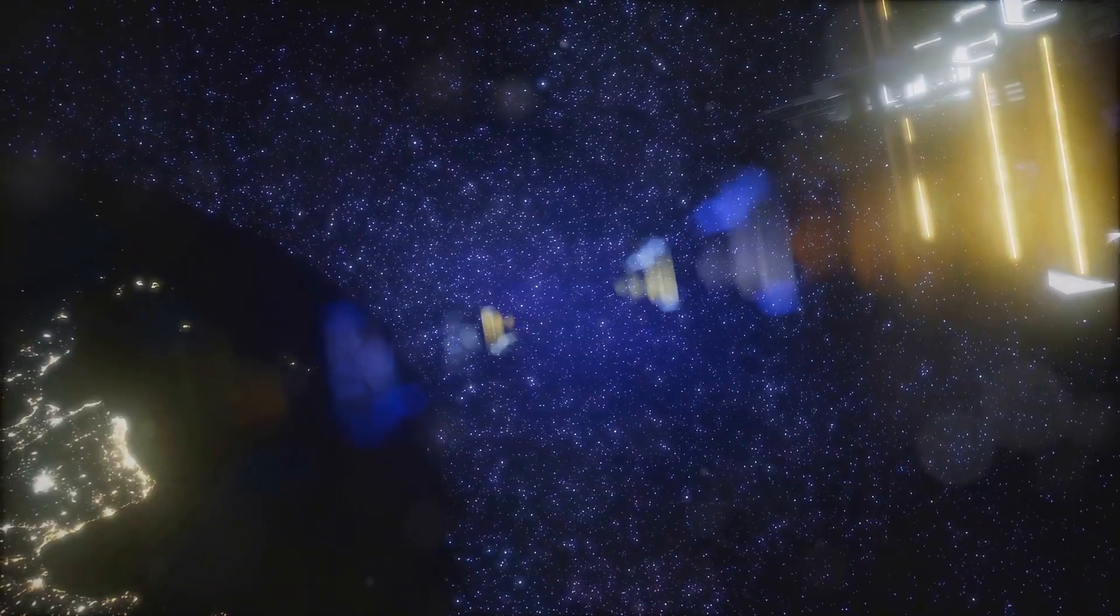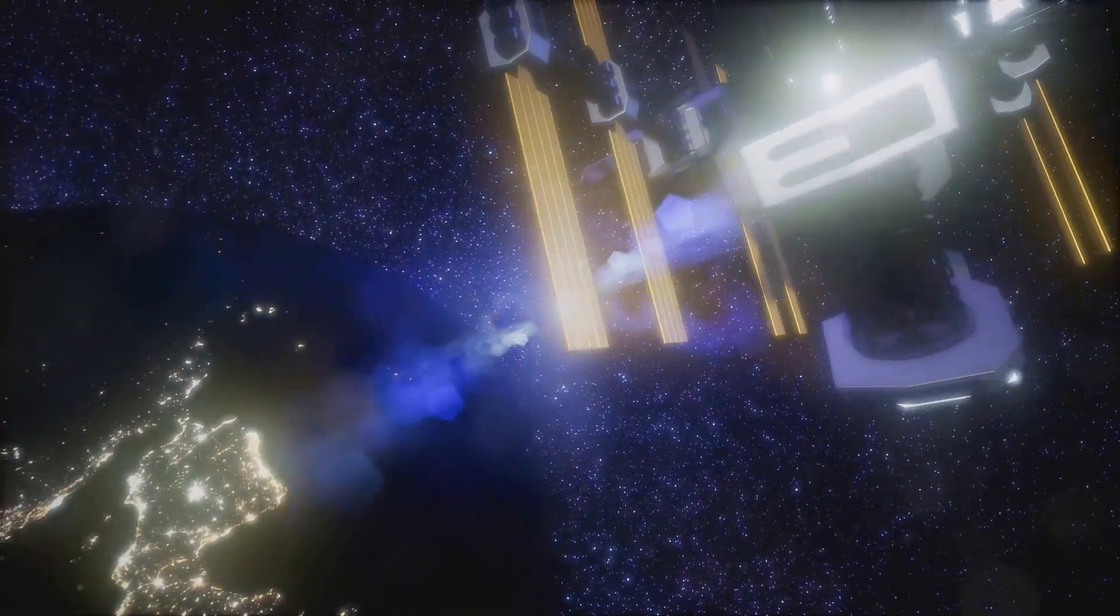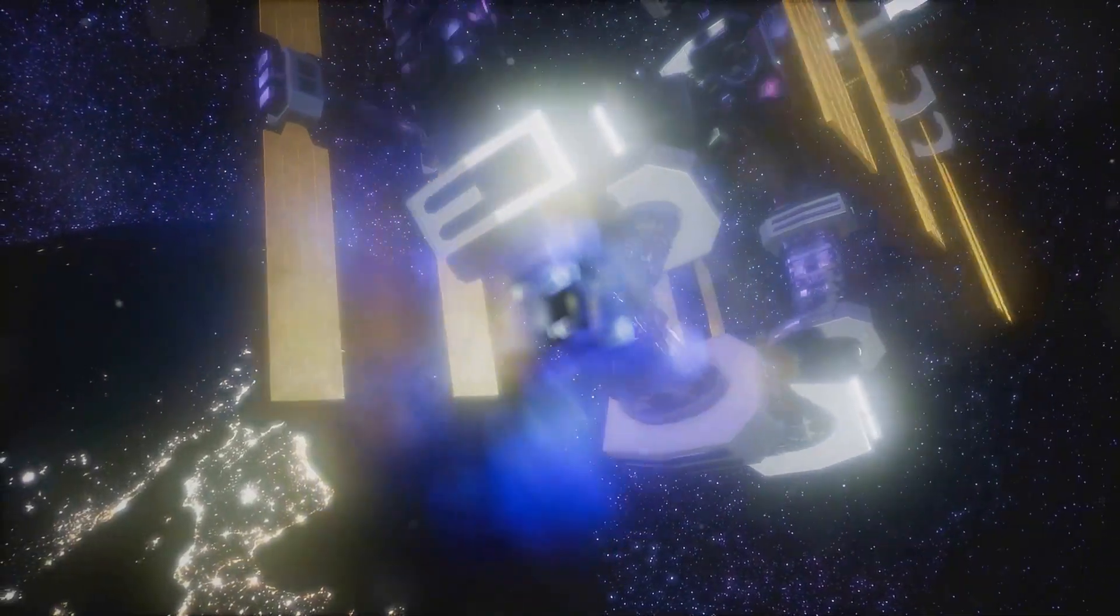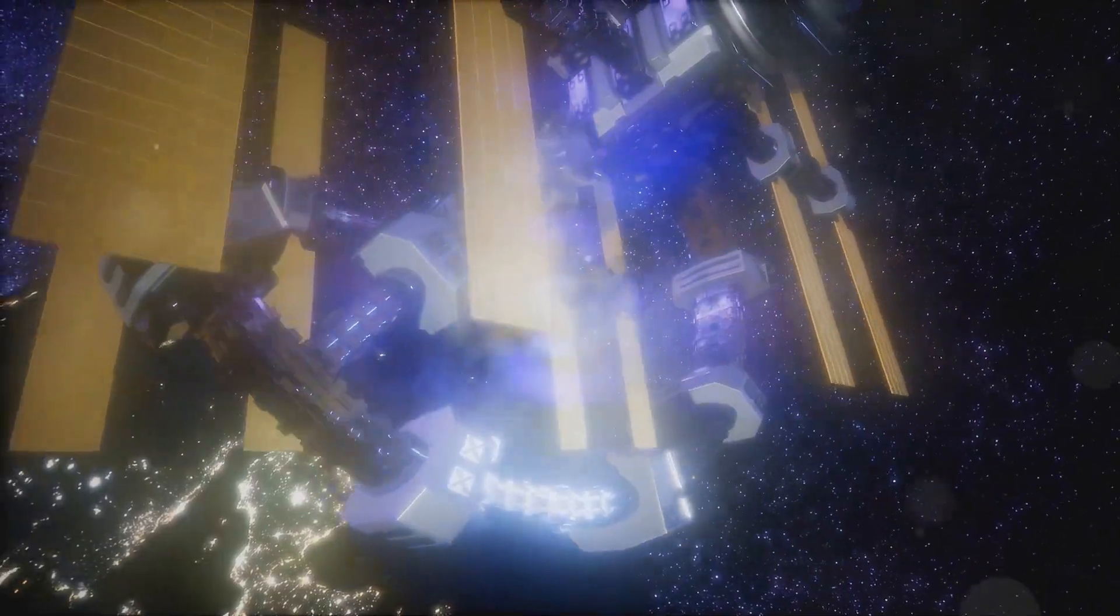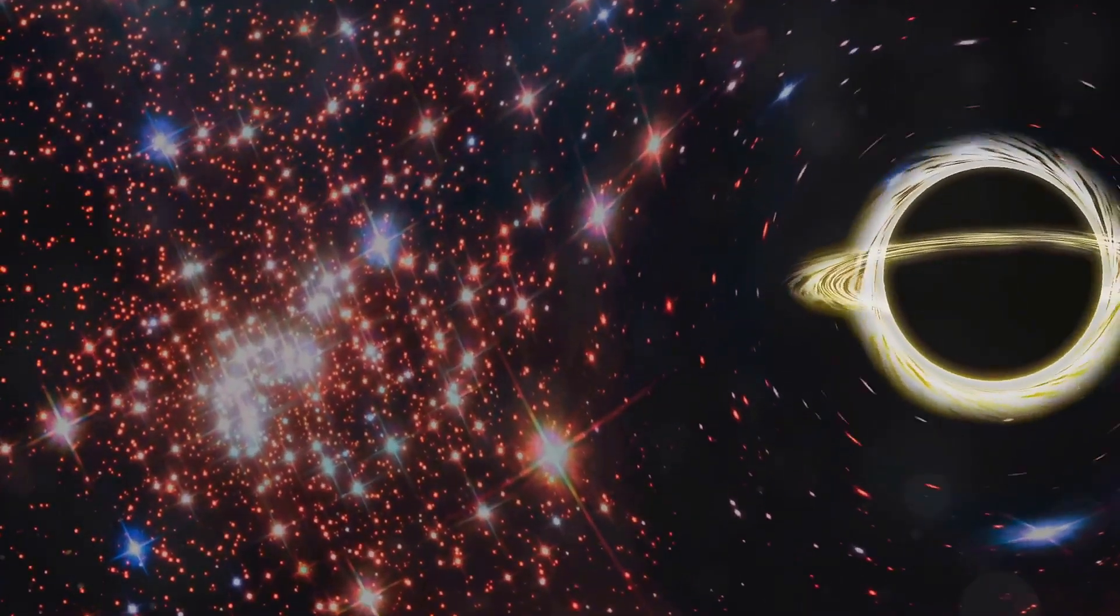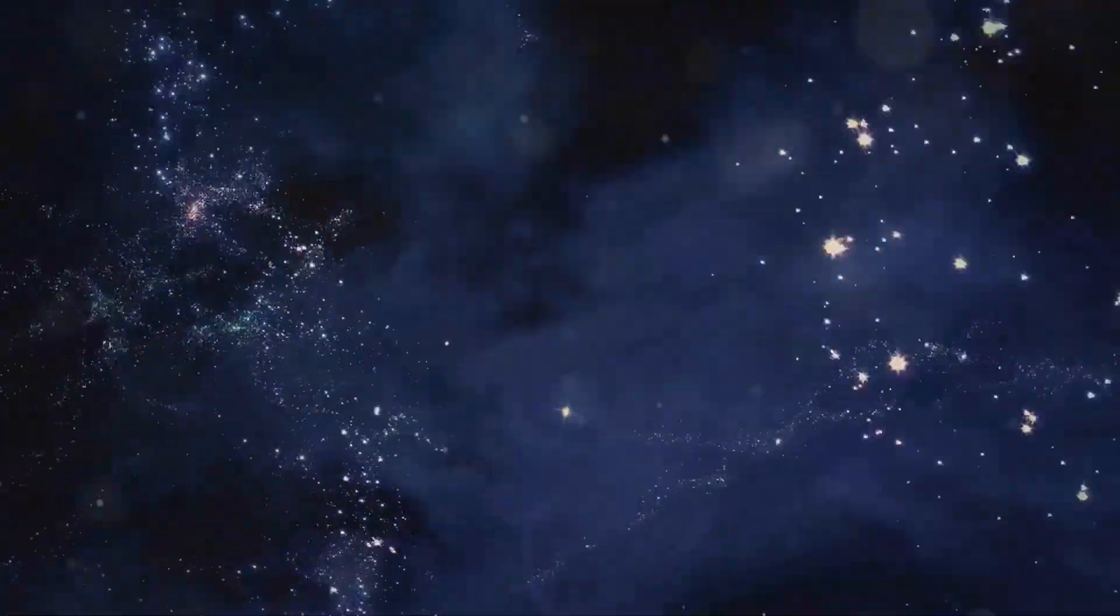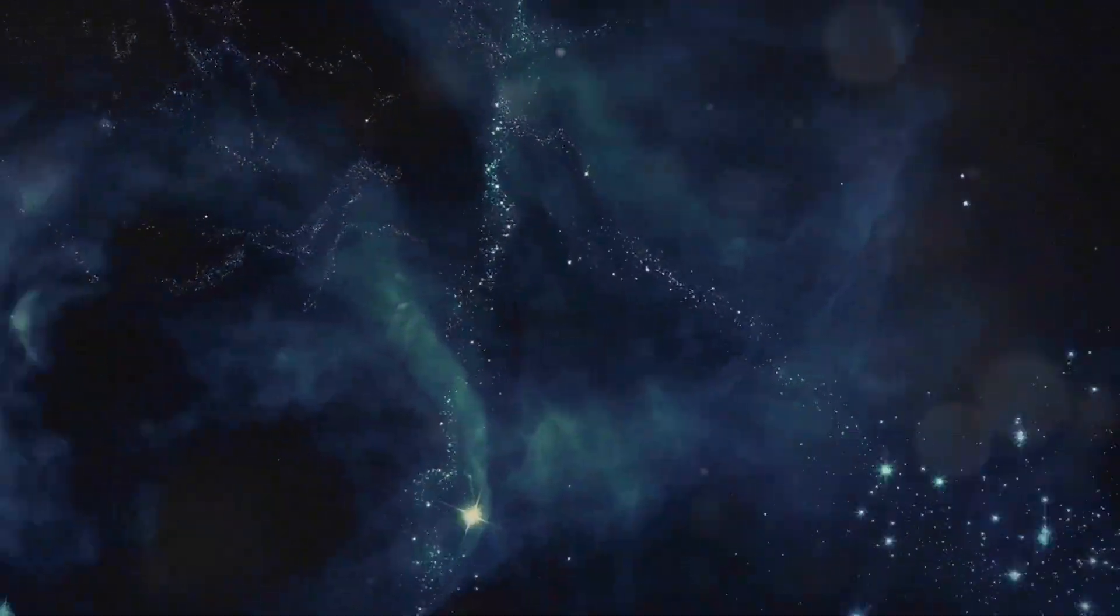In this video, we'll explore a concept that pushes the boundaries of our understanding of space, time and reality. Transfinite Universe Theory suggests that our cosmos may be far more complex than we ever imagined, with layers of infinity stacked upon each other like an endless cosmic onion.